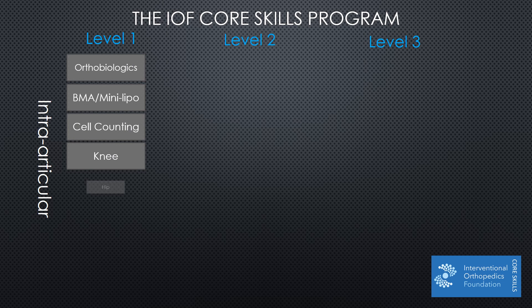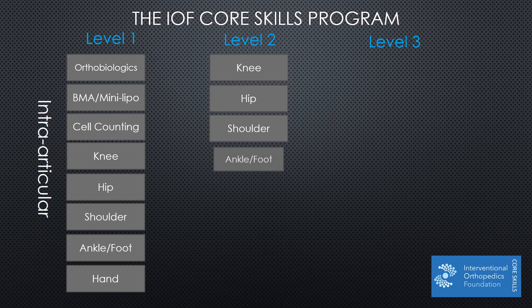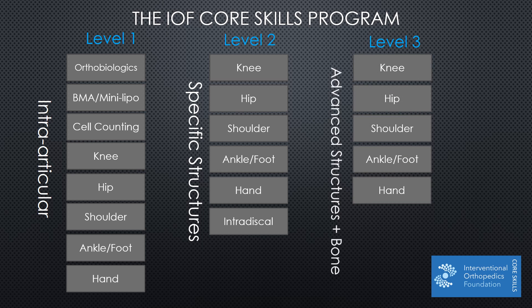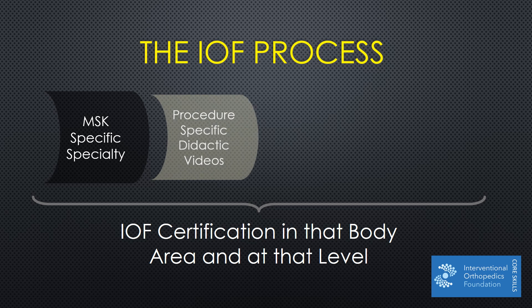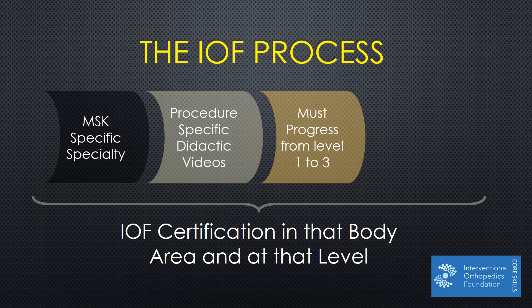The IOF core skills program has three parts. It goes level one, where we're focused primarily on intra-articular simple injections, and then level two, where you get into much more in the way of specific structures and how to inject those specific structures in all of these areas, and then level three, where the focus is on advanced procedures. The IOF process starts with an MSK-specific specialty, and then there are procedure-specific didactic videos for each individual injection — about 50 different injection procedures to learn. You have to progress from the simplest in level one to the more advanced in level three.